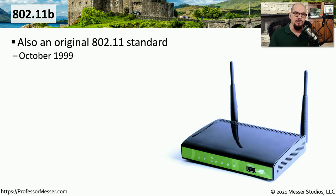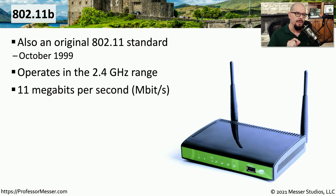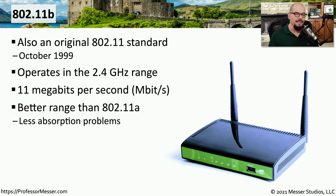Also in October of 1999, the 802.11b standard was released at effectively the same time. This standard operates at 2.4 gigahertz and at a speed of 11 megabits per second, obviously much slower than the 54 megabits per second seen with 802.11a. Because it operates at 2.4 gigahertz, those frequencies tend to bounce off of other objects around us, which is a bit different than 802.11a, where objects tend to absorb those higher frequencies.